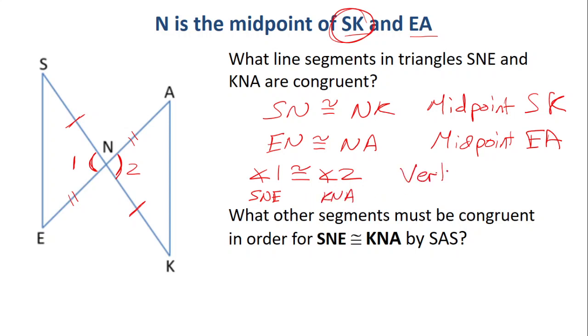Because they're vertical angles. So what else do we need to know to say that these triangles are congruent by side, angle, side? Nothing. It's done. We don't need to know anything else. We're good. All the information was given to us through those sentences.